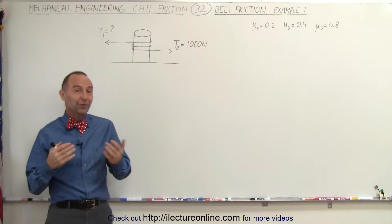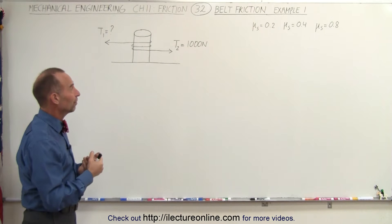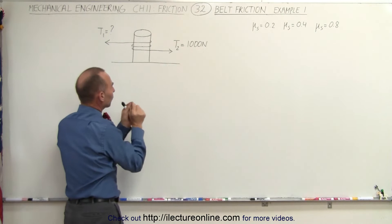Welcome to our lecture line. Here's our first example of how to work with that equation that deals with belt friction. What we have here is a rope that's wrapped around the post. It's wrapped around twice.